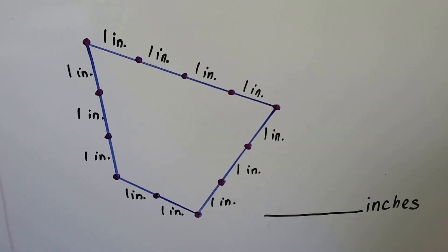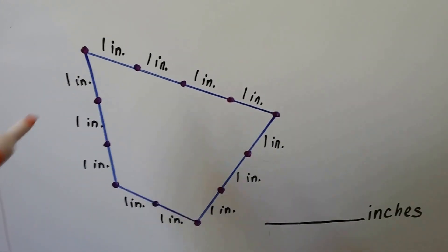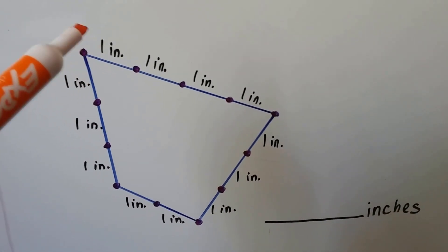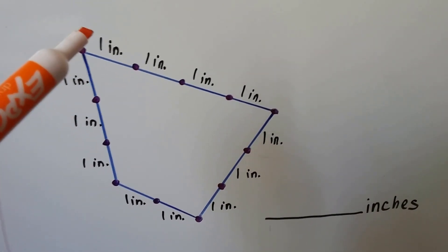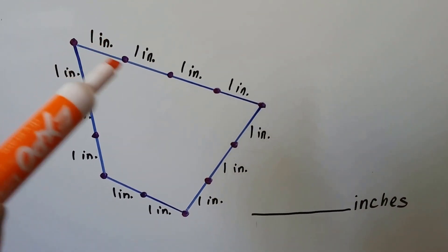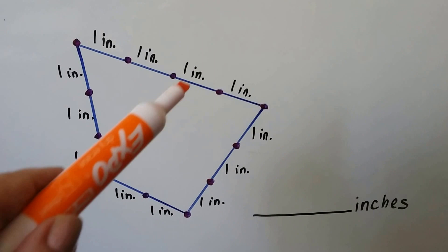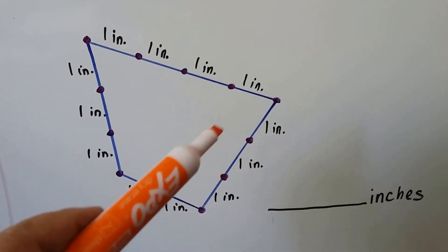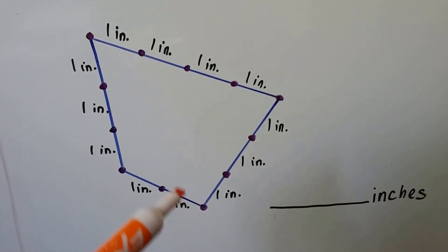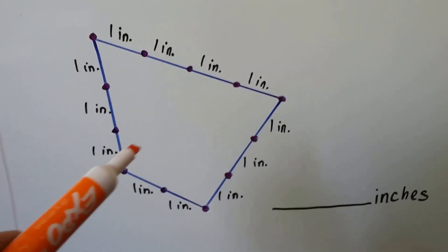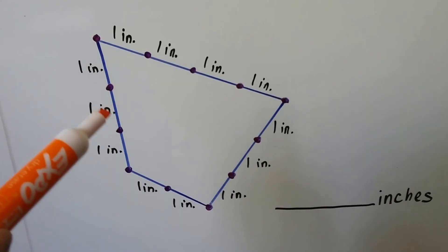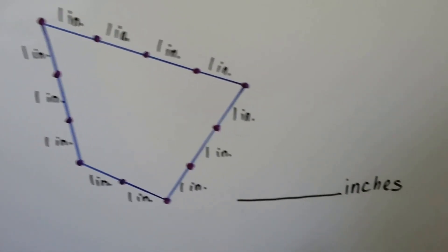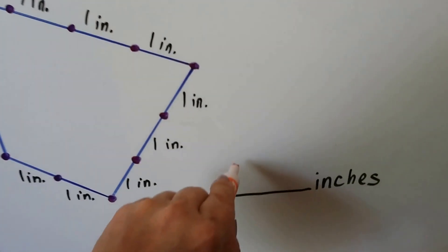What's the perimeter for this shape? Let's count the inches going around — we have to make sure we don't count them twice. 1, 2, 3, 4, 5, 6, 7, 8, 9, 10, 11, 12. The perimeter is 12 inches.